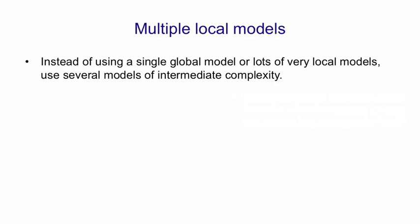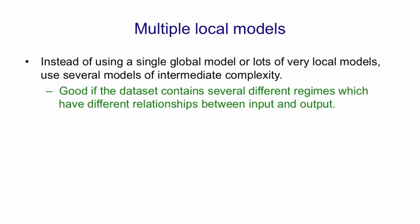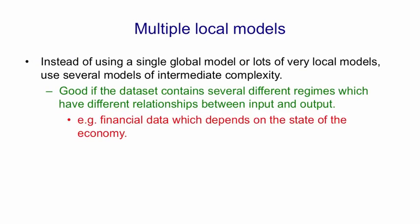In between these two ends of the spectrum, we have multiple local models that are of intermediate complexity. This is good if the data set contains several different regimes, and those different regimes have different input-output relationships. In financial data, for example, the state of the economy has a big effect on determining the mappings between inputs and outputs, and you might want to have different models for different states of the economy. But you might not know in advance how to decide what constitutes different states of the economy. You're going to have to learn that too.